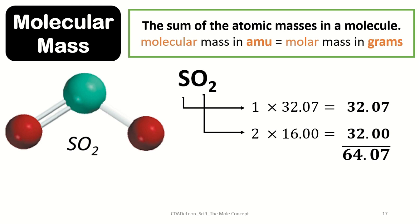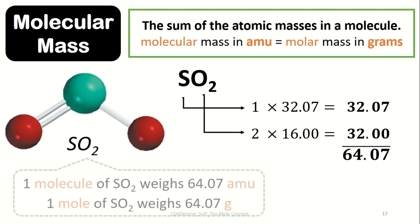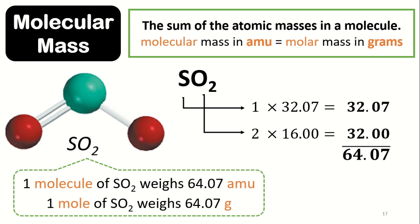So one molecule of sulfur dioxide weighs about 64.07 AMUs, while the molar mass of sulfur dioxide — or one mole of sulfur dioxide — weighs about 64.07 grams. Molecular mass and molar mass are essentially the same; they are just expressed in different units.